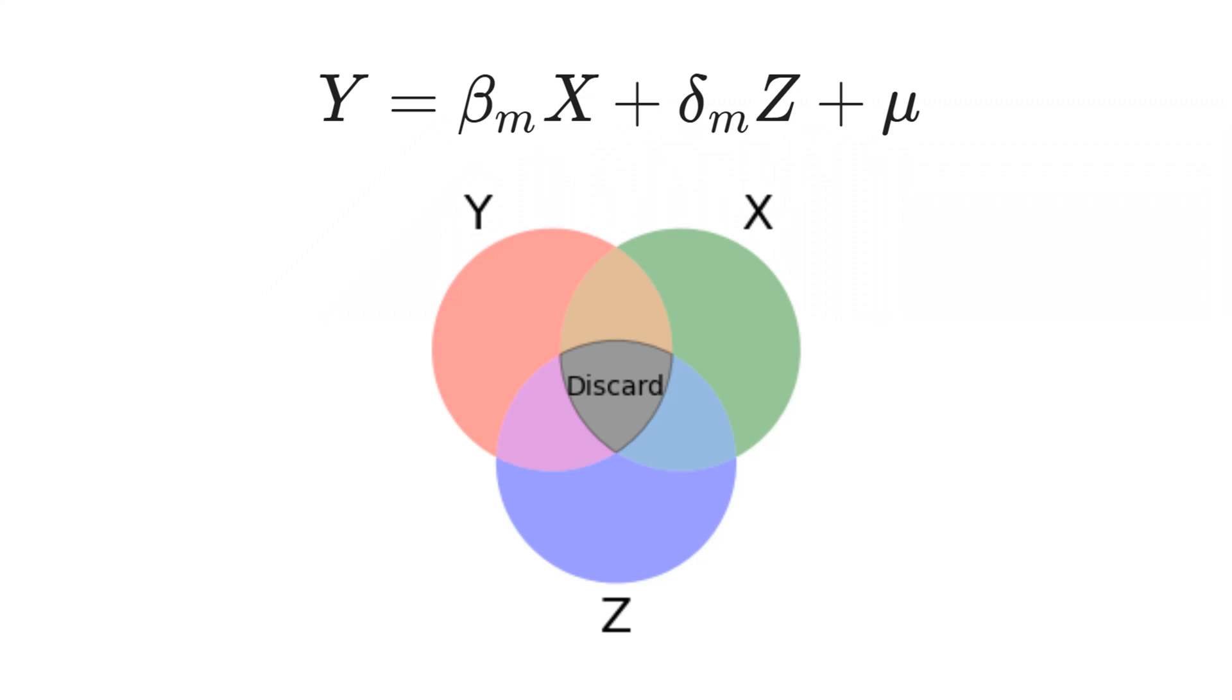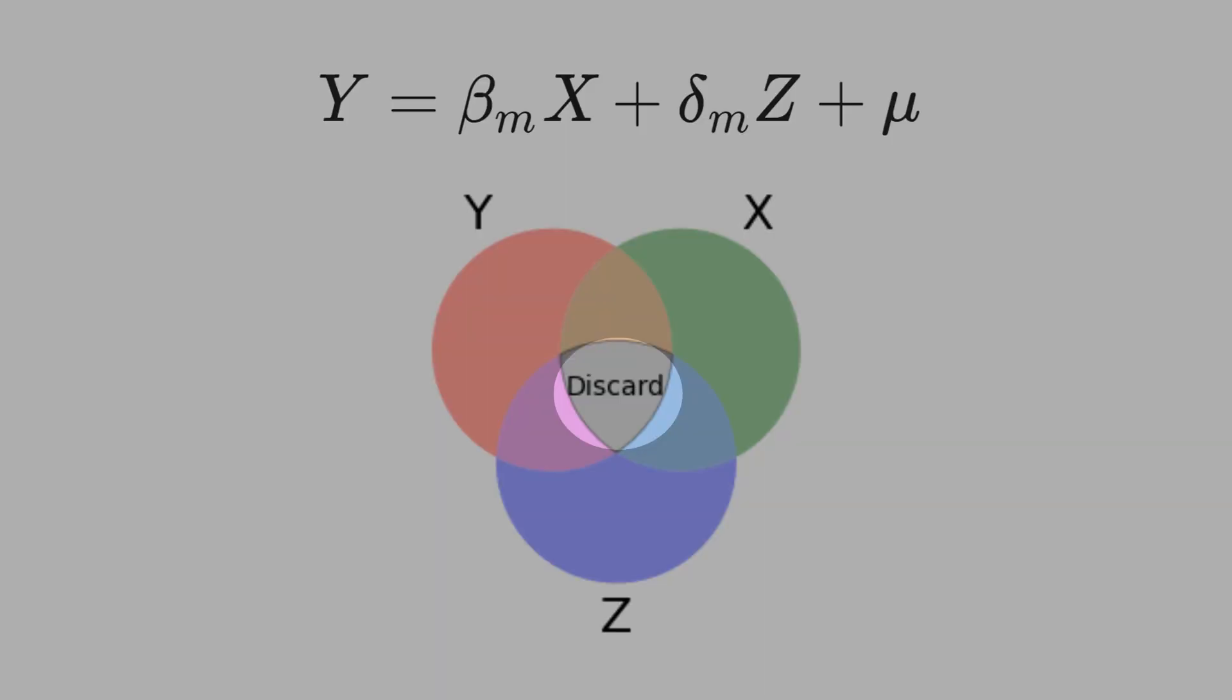Therefore, in multiple regression, the black area has to be discarded because you cannot attribute it to X or Z—you don't know which. One consequence is that the area of X that explains Y is smaller now. That means X is less powerful to explain Y.